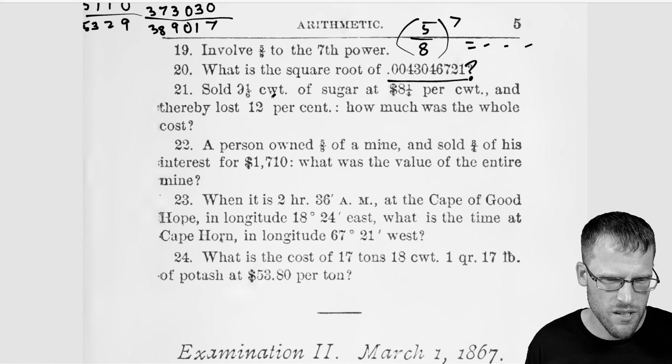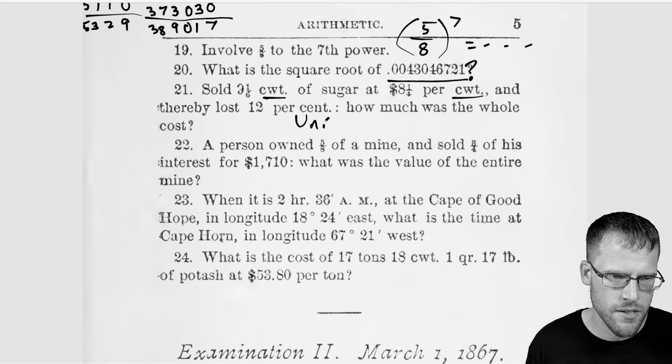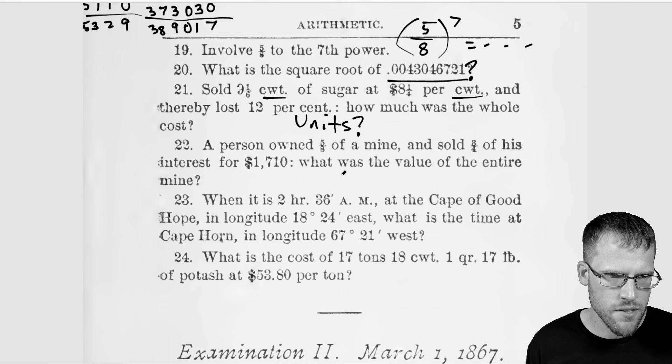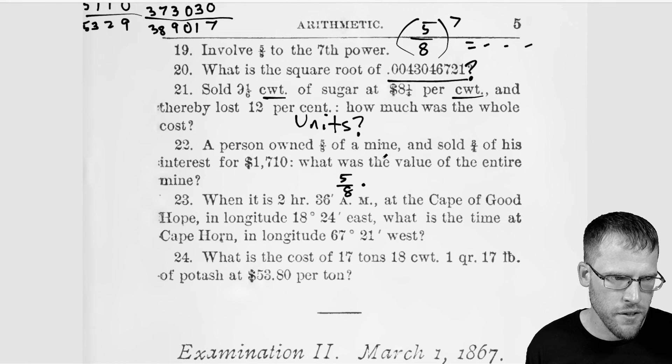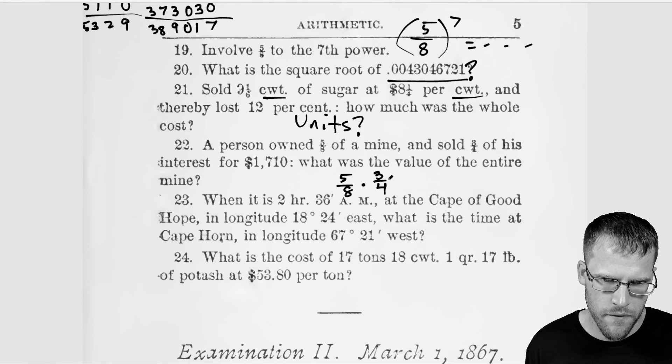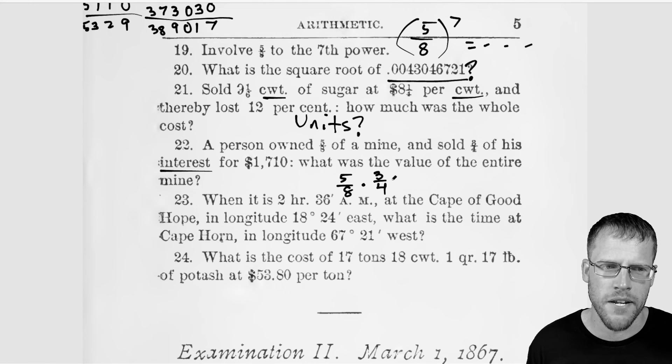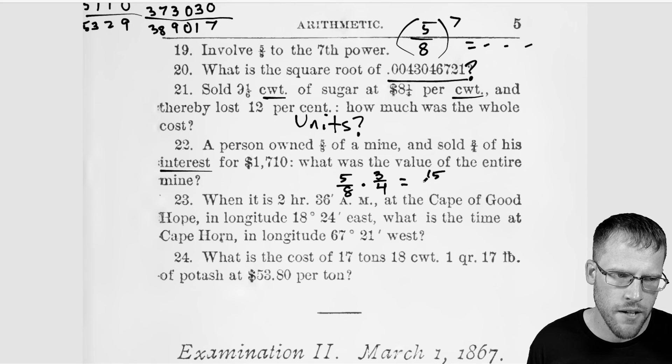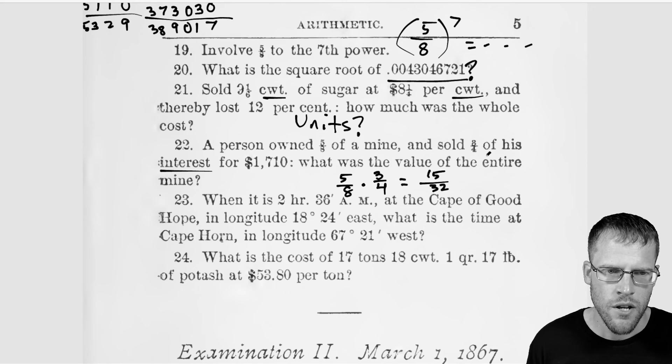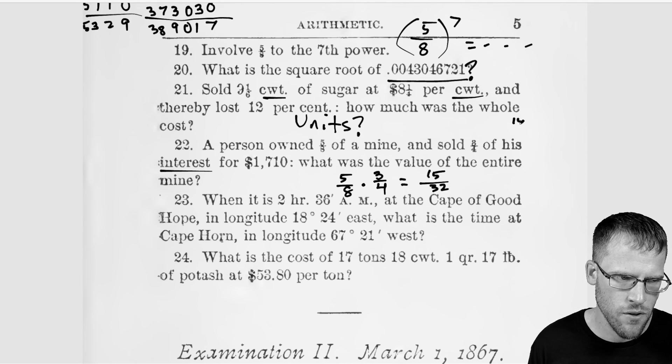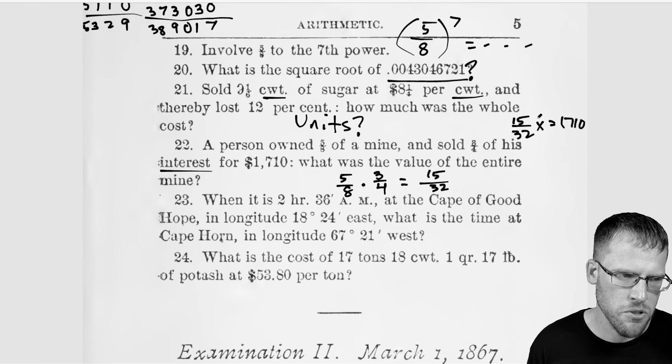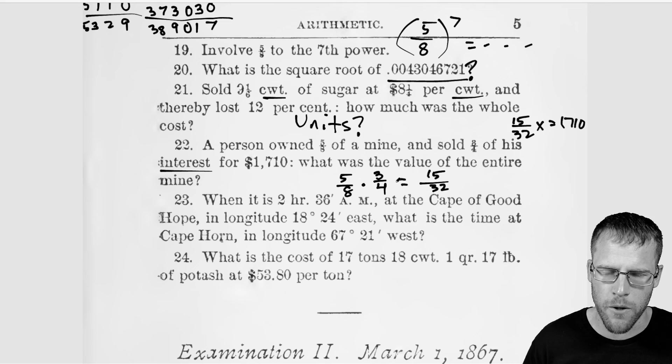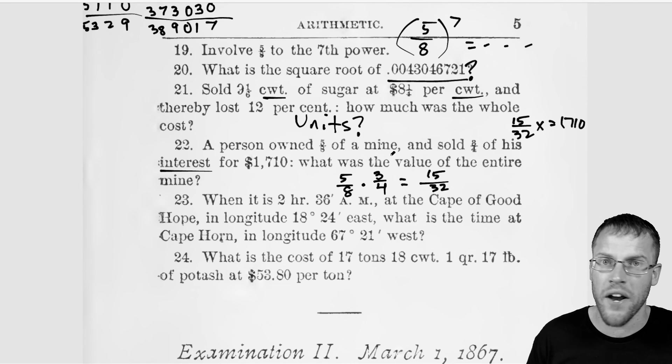All right. Sold nine and one six, whatever this unit is. Yeah. So once again, I'm just saying units, I don't know the units here. So I need to learn that. A person owned five eighths of a mine. Okay. So five eighths and sold three fourths of his interest, but the interest sounds like the profit made, but maybe back then that meant something different. So what I'm thinking here is 15 over 32 is how much was sold for 1710. So 15 over 32 of the total cost equals 1710. So just multiply both sides by 32 over 15 is my best idea for how to approach this, but could be wrong here. There might be something that I'm missing out on.